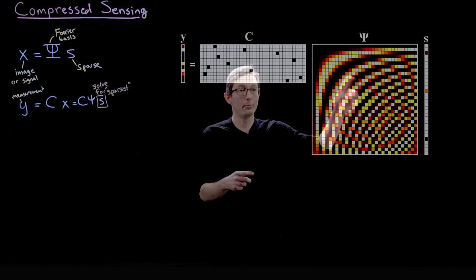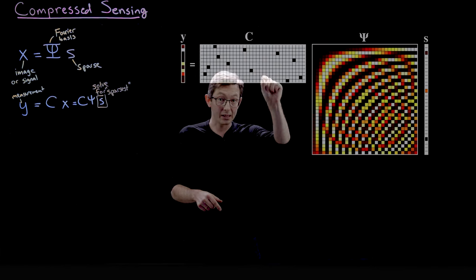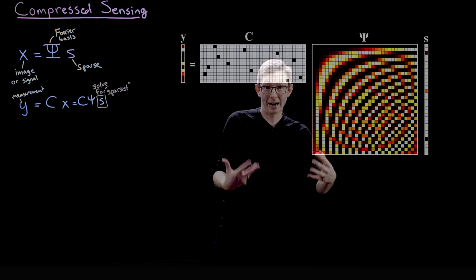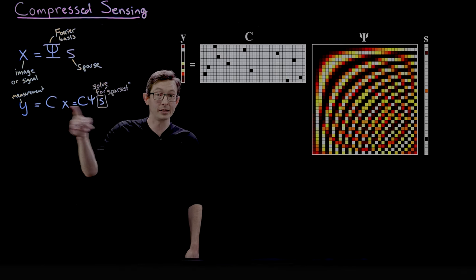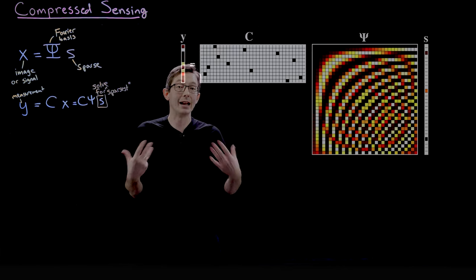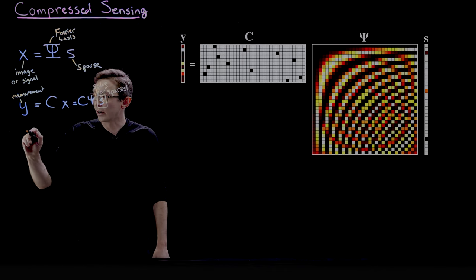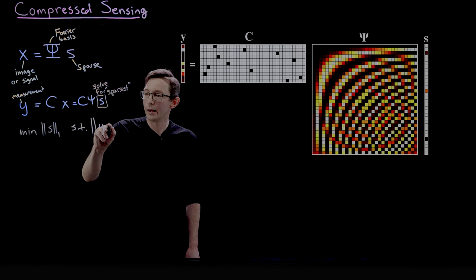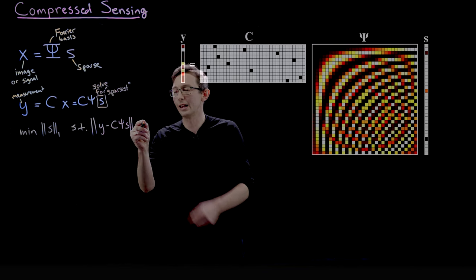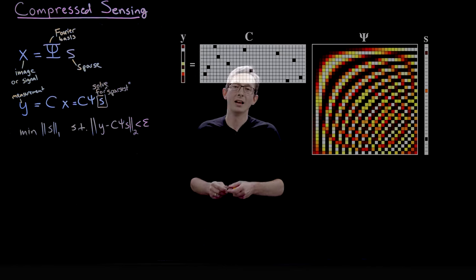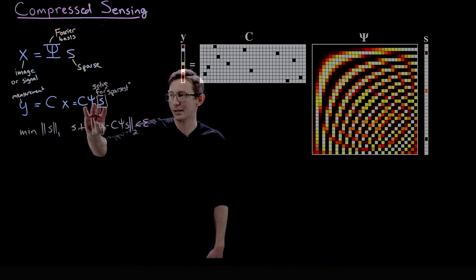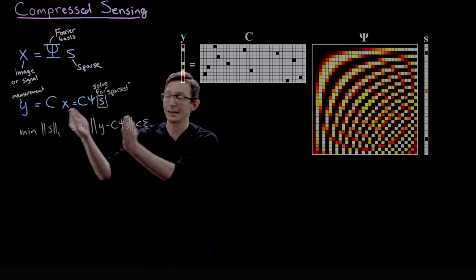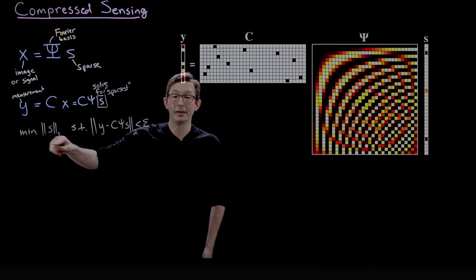So we're trying to solve for S. We know psi, everyone knows psi, it's just the Fourier basis. We know C, we know which pixels we're measuring, and we know Y, we know the value of those pixels that we measured. So what we're trying to do is solve for S, the sparsest vector out of all the infinitely many vectors S that satisfy this underdetermined system. We're going to try to find the minimum one norm S such that Y minus C psi S is either equal to zero or less than some epsilon, less than some really small number because that's more general. So we're basically trying to find an S that almost satisfies this equation even if there's a little bit of measurement noise. And we're trying to find out of all of those infinitely many S's, the one that is the sparsest, which is going to be achieved by this one norm regularization.